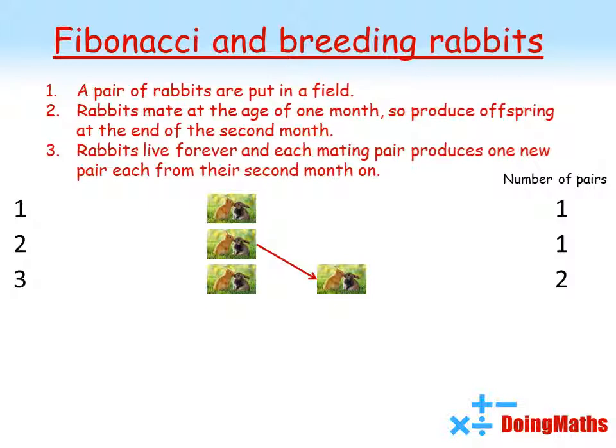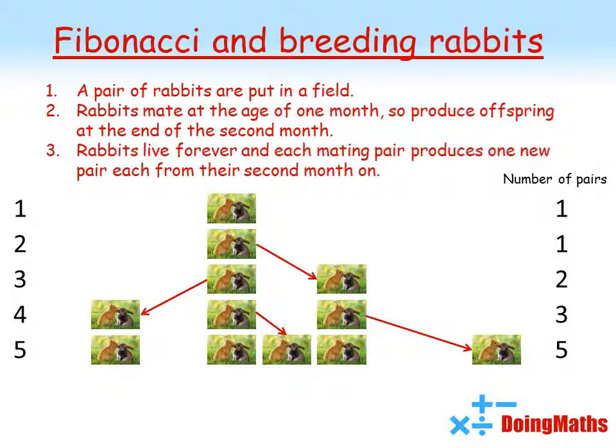In Fibonacci's idea, the rabbits live forever and each mating pair produces one new pair each from their second month on. Going into the next month, our original pair produce another pair, but the second pair aren't old enough yet, so we've got a total of three pairs. The following month the original pair produce yet another pair, and now the second pair are old enough to produce their own offspring, giving us a total of five pairs.